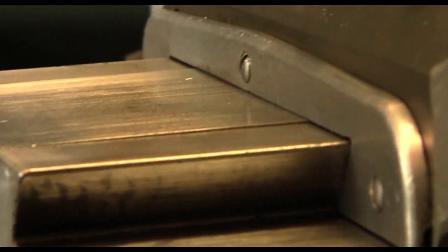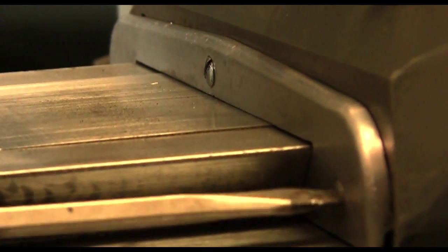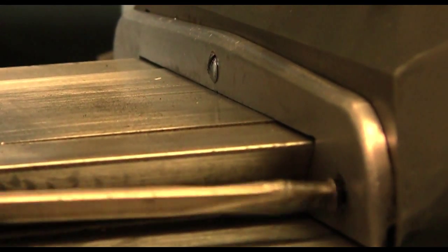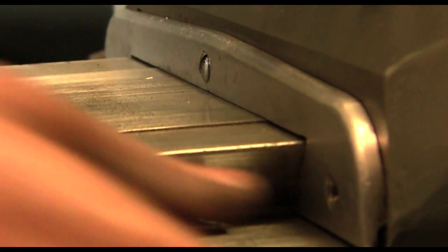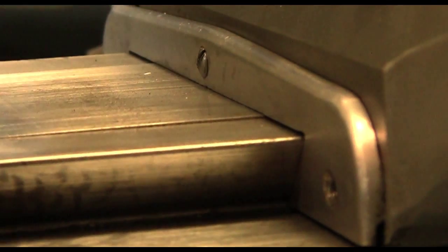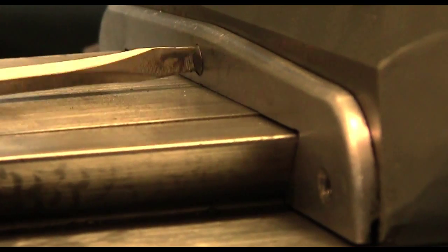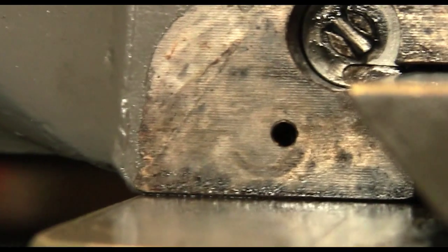Once you've pinpointed the amount of play you need to reduce, you can begin adjusting both the x and y gibs of your knee mill. In this example, you'll see that the y-axis gib is covered up by a simple end plate. Unscrew the front plate and you'll expose the y-axis gib and begin your adjustments there.